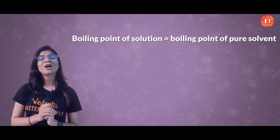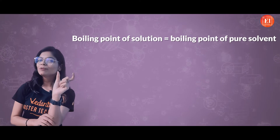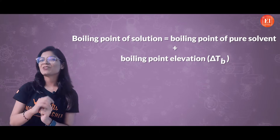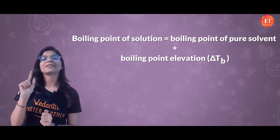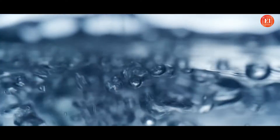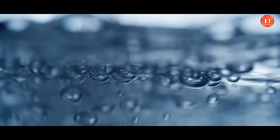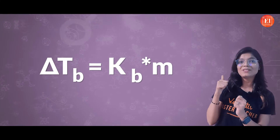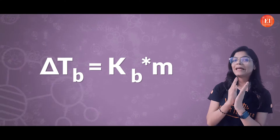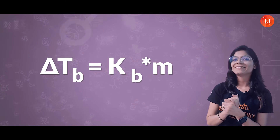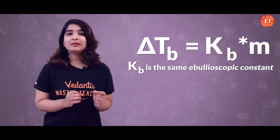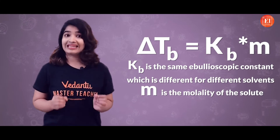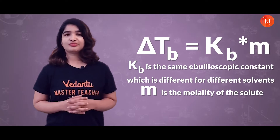This will increase the boiling point of the solution and that is called boiling point elevation. The formula: boiling point of solution will be equal to boiling point of pure solvent plus elevation in boiling point, represented by ΔTb. And ΔTb is also proportional to the concentration of solute and can be expressed as ΔTb = Kb × m, where Kb is the ebullioscopic constant — different for different solvents — and m is the molality of the solute.